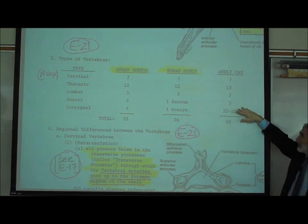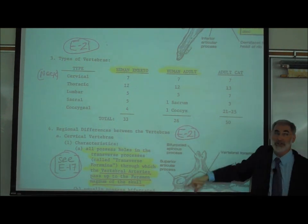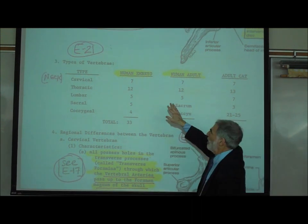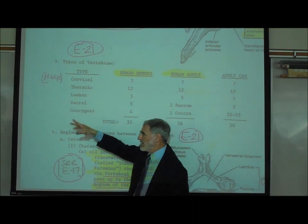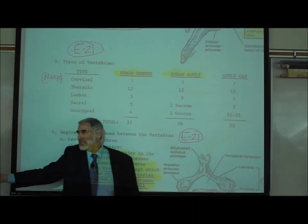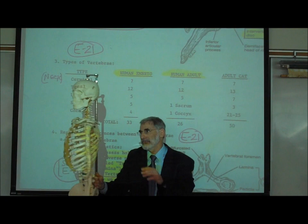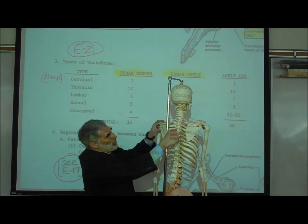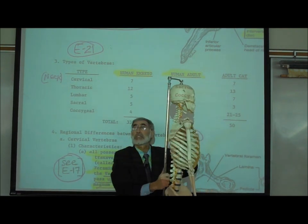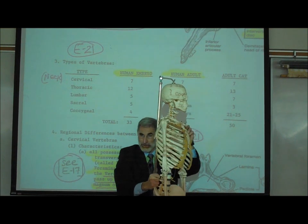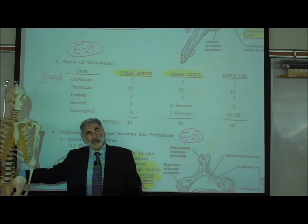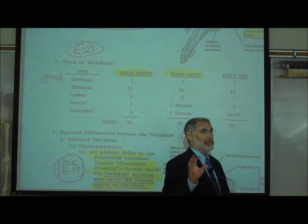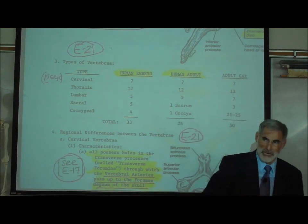On the thoracic vertebrae — the vertebrae of the chest — attached to each of the 12 thoracic vertebrae is a pair of ribs. Since we have 12 thoracic vertebrae, we have 12 pairs of ribs.